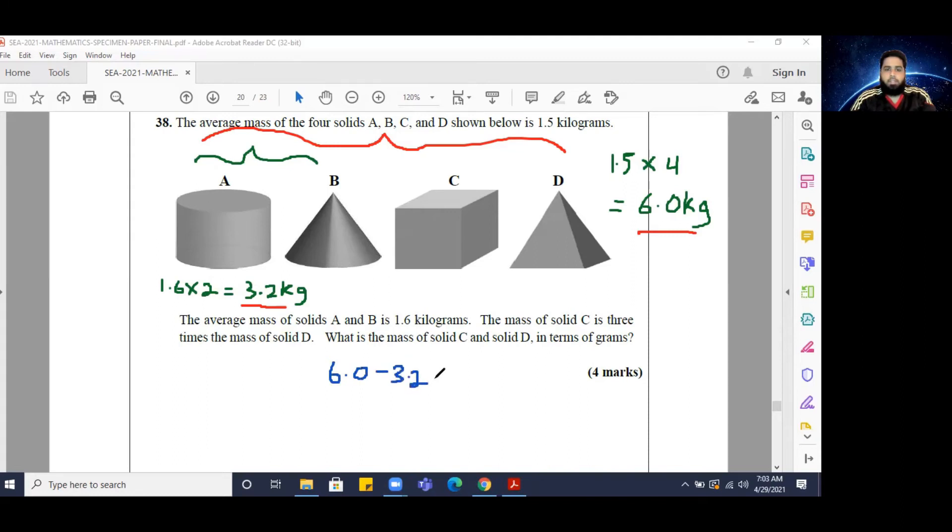And that would be our combined mass for C and D. Now the question further goes on to state the mass of solid C is 3 times the mass of solid D, so if I represent this here with a little block diagram or bar diagram.